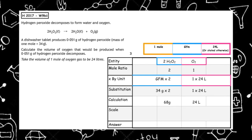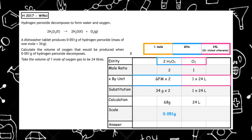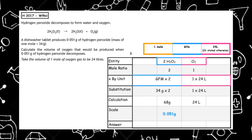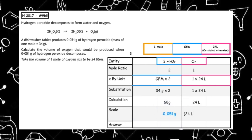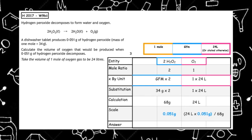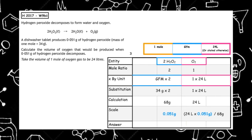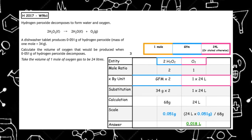We don't have 68 grams. In the question, we have 0.051 grams. So we cross multiply: 24 litres times 0.051 grams divided by 68, which gives us a total volume of 0.018 litres.